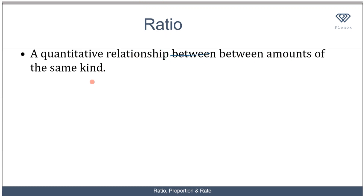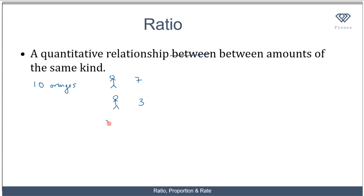Between amounts of the same kind. So what does this mean? As an example, let's assume you have 10 oranges and you want to share it with your younger sibling. So you can say I'm going to take 7, and give my sibling 3. So in this case, the ratio is going to be 7 ratio 3.